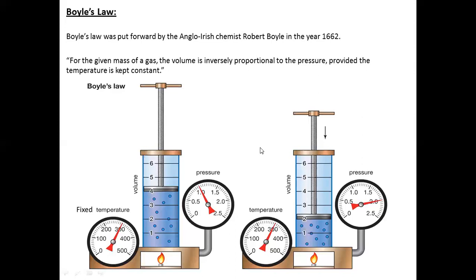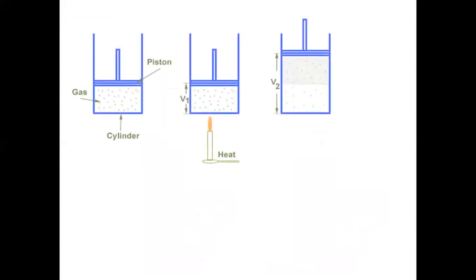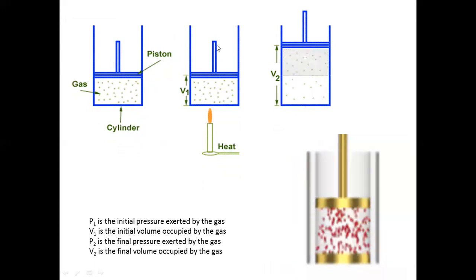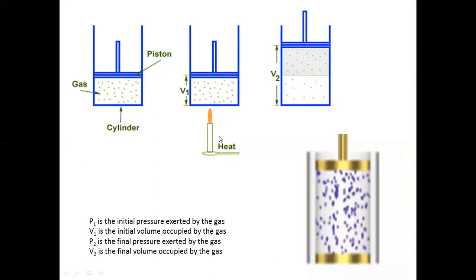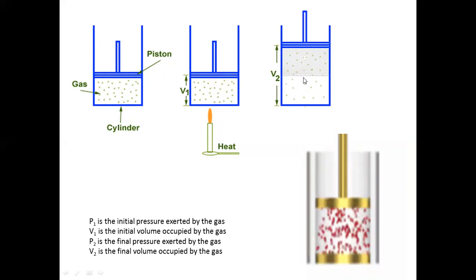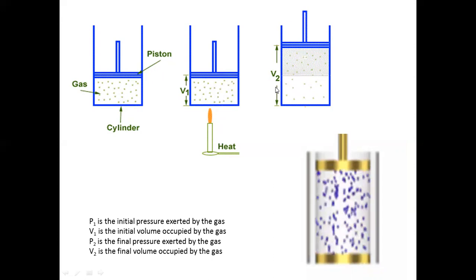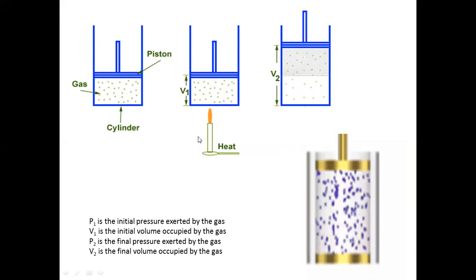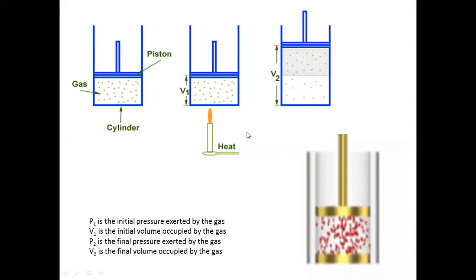Basically, they established the relationship between volume and pressure. Volume is inversely proportional to the pressure: if volume increases, pressure will decrease; if pressure is increased, then volume will decrease. That is the relationship between pressure and volume, with temperature constant. We have another figure — a cylinder filled with gas and a movable piston. As soon as we decrease the volume, the pressure will increase automatically. We refer to the initial pressure as P1, initial volume as V1, final pressure as P2, and final volume as V2.